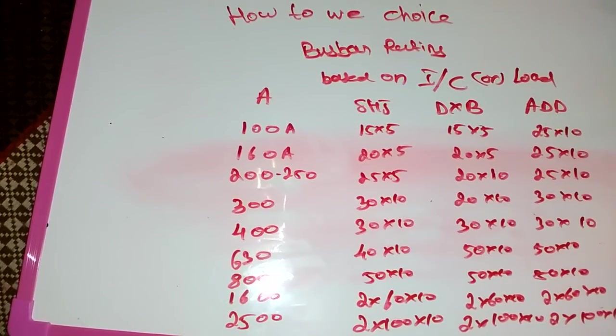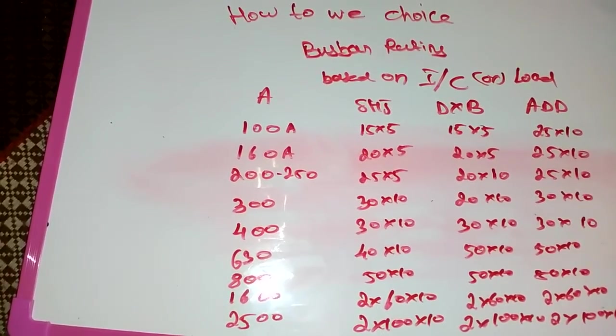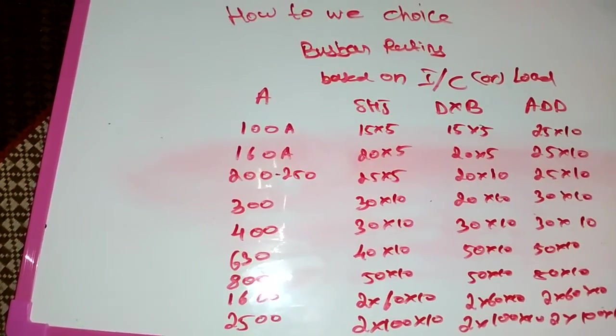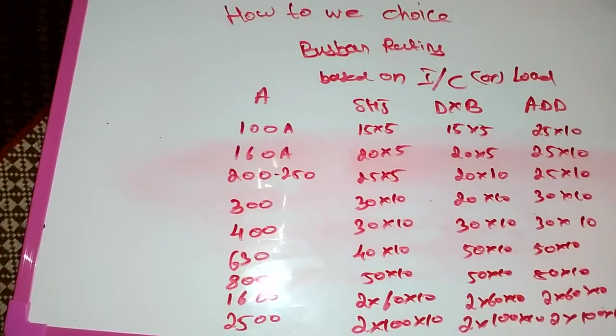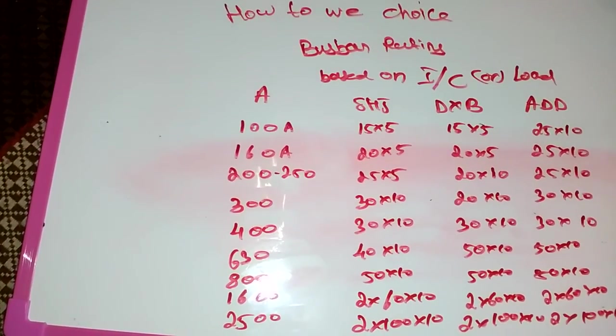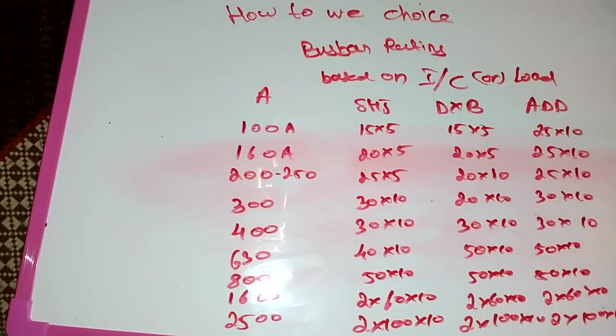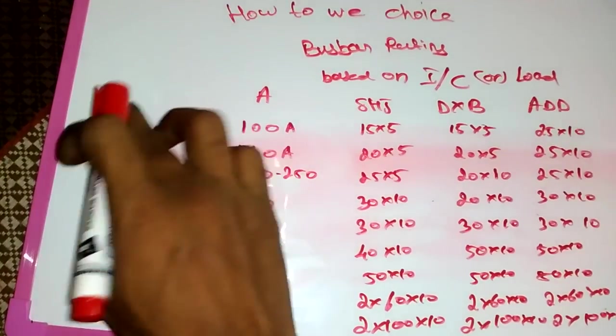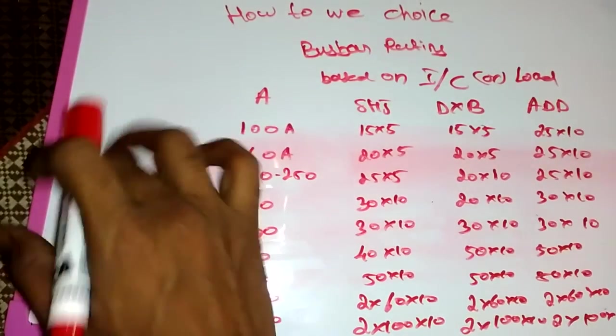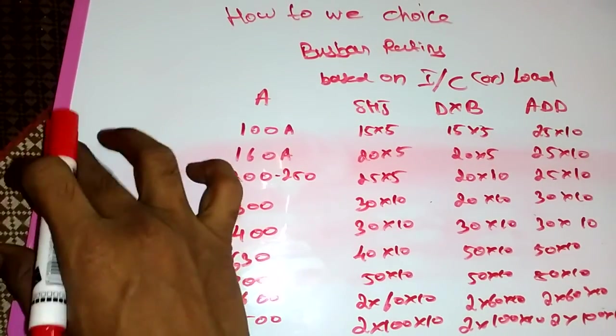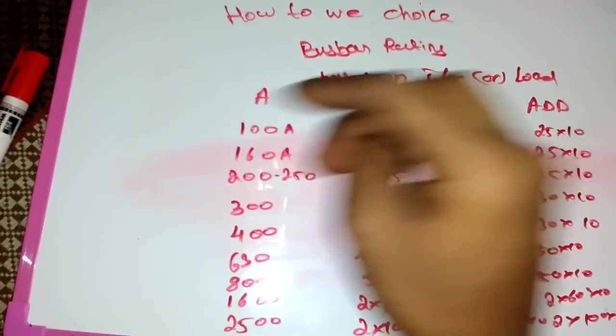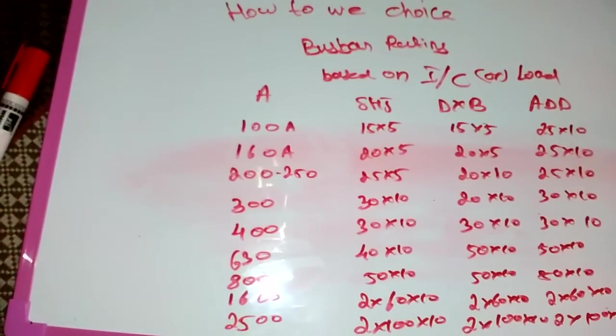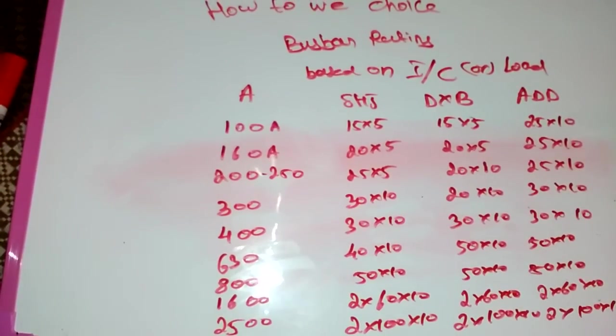That's all. Maybe you got some valuable points here. This is a very simple and easy method to choose a busbar rating for Sharjah, Abu Dhabi, and Dubai. In other emirates like Ras Al Khaimah and Fujairah, these are the same like this. Thank you, next we see for some other important things.